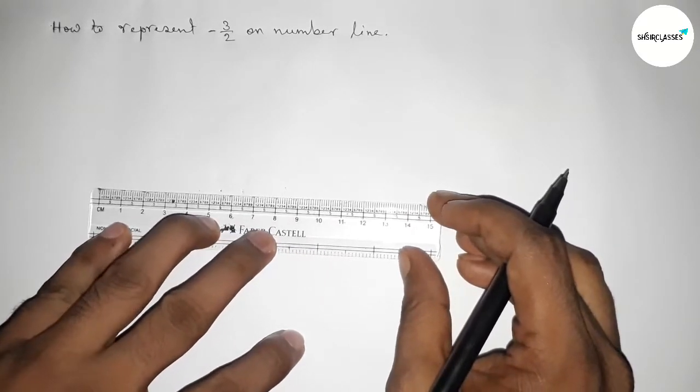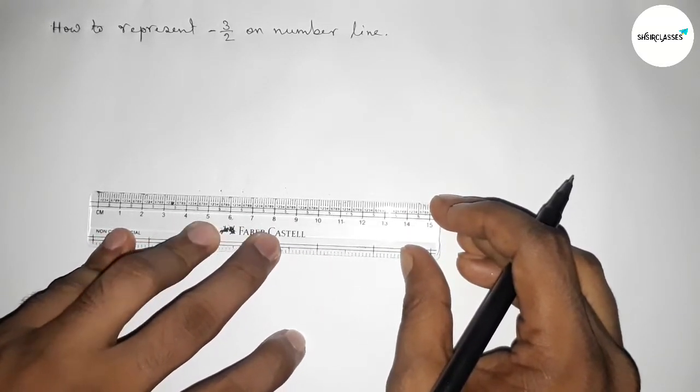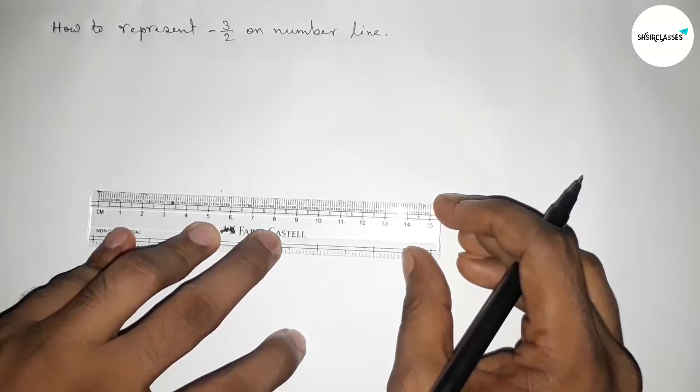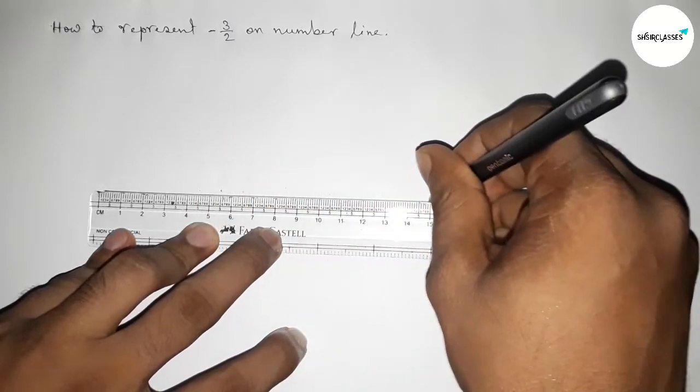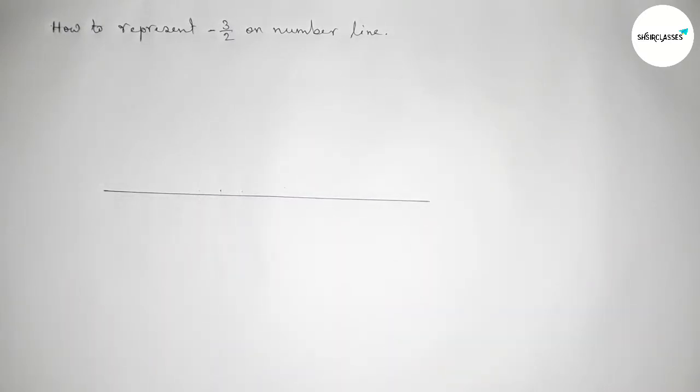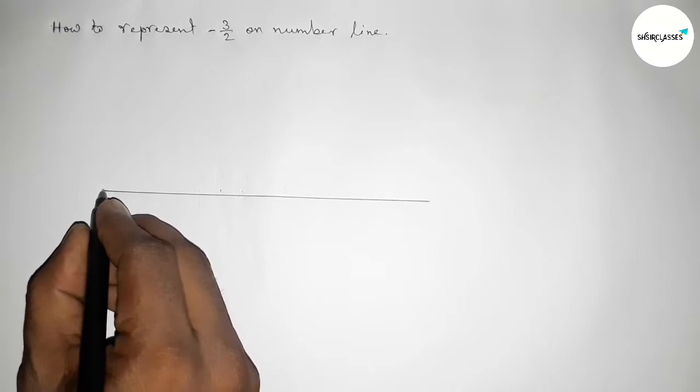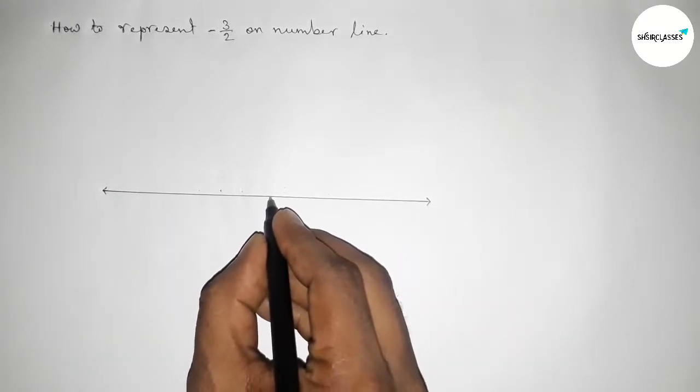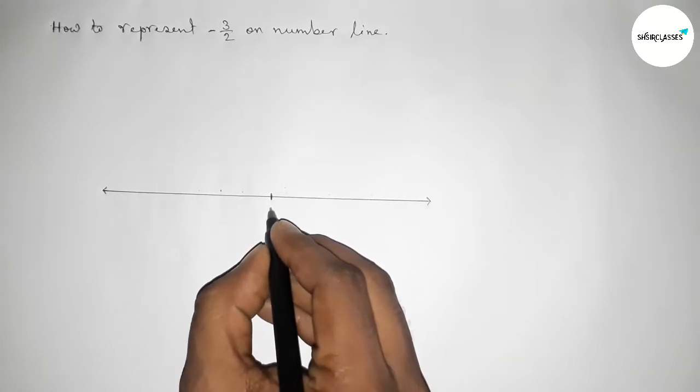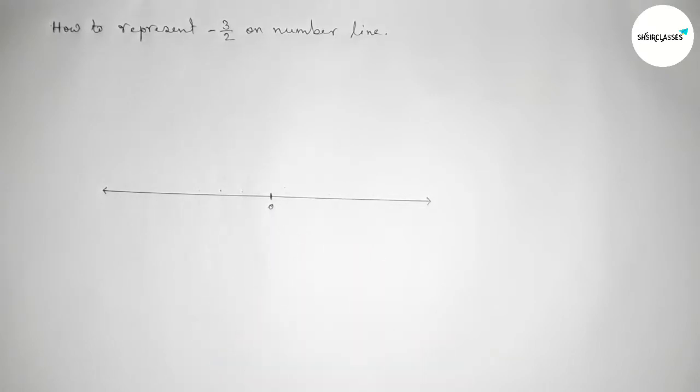First of all, we have to draw a number line here. Now first drawing here a line of any length and taking arrow mark on both sides. Now taking here a starting number here, zero. Okay, so next...